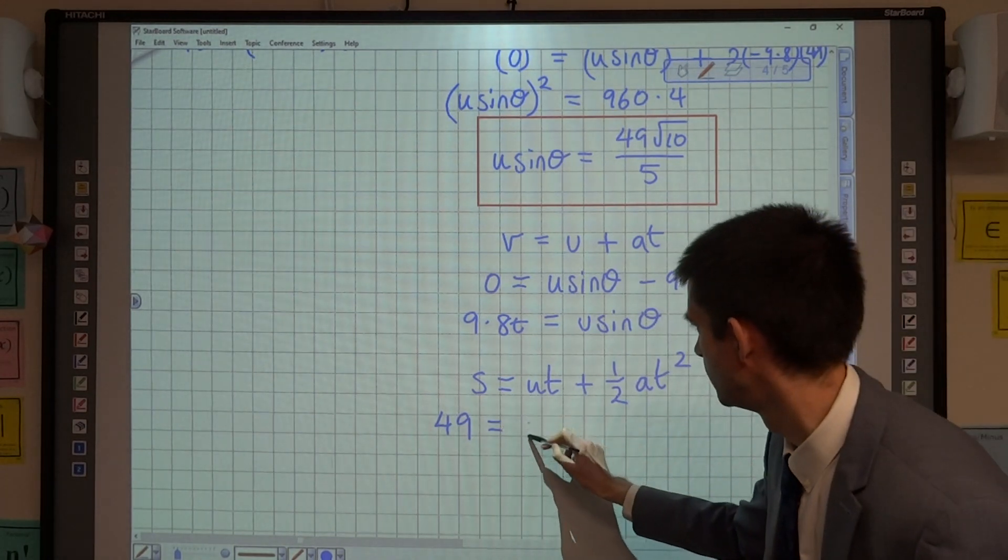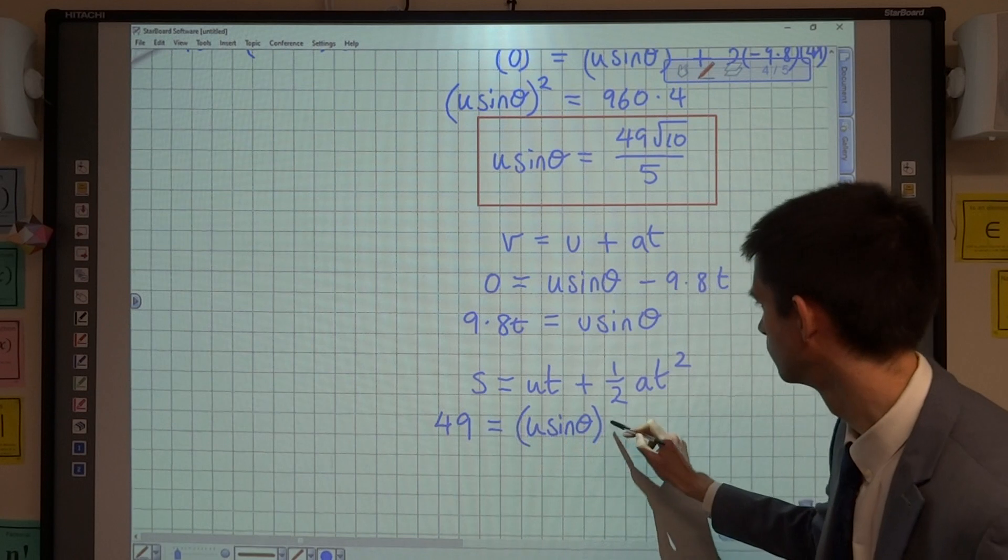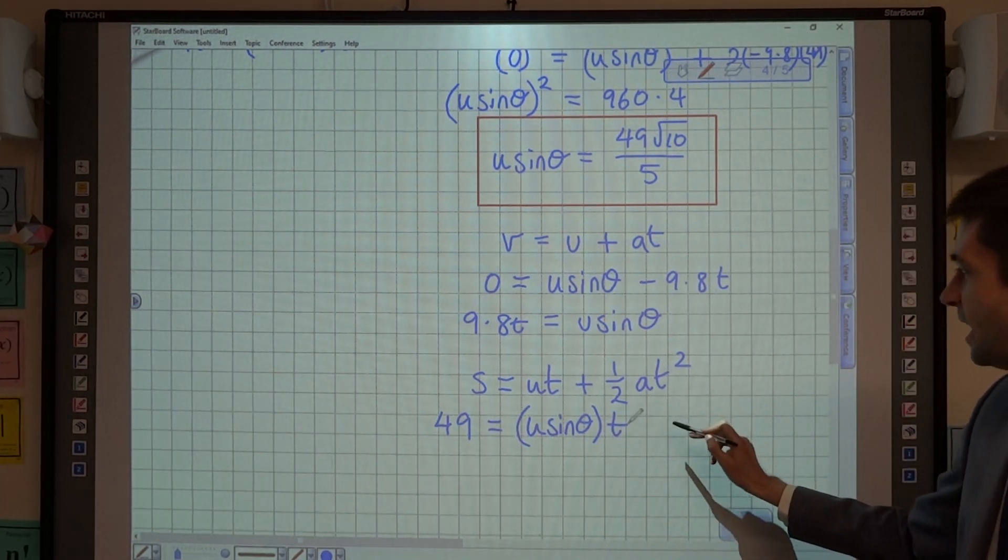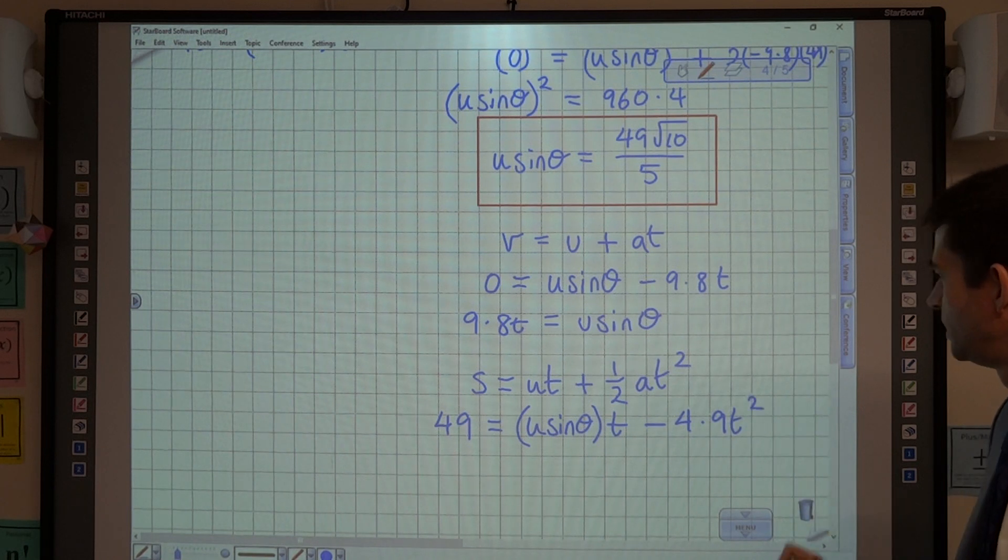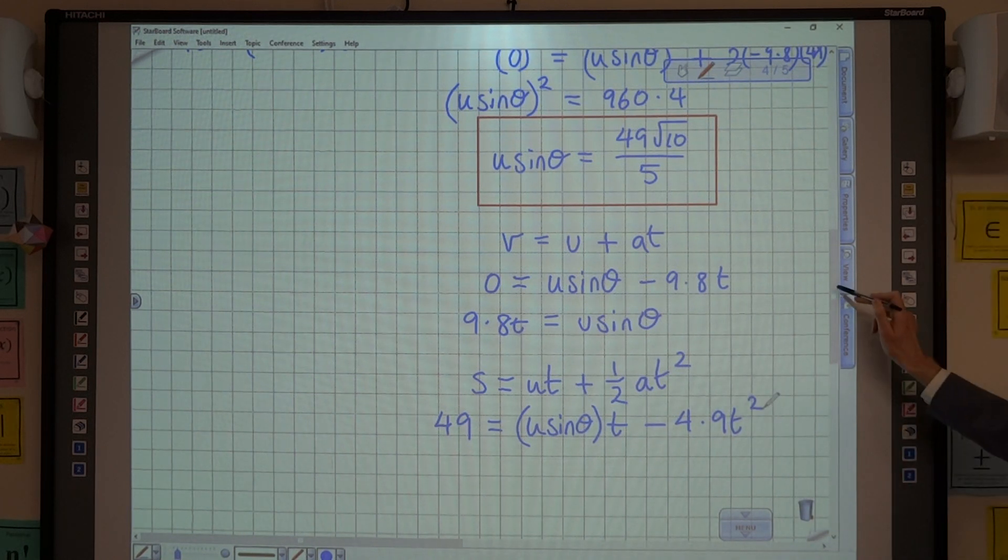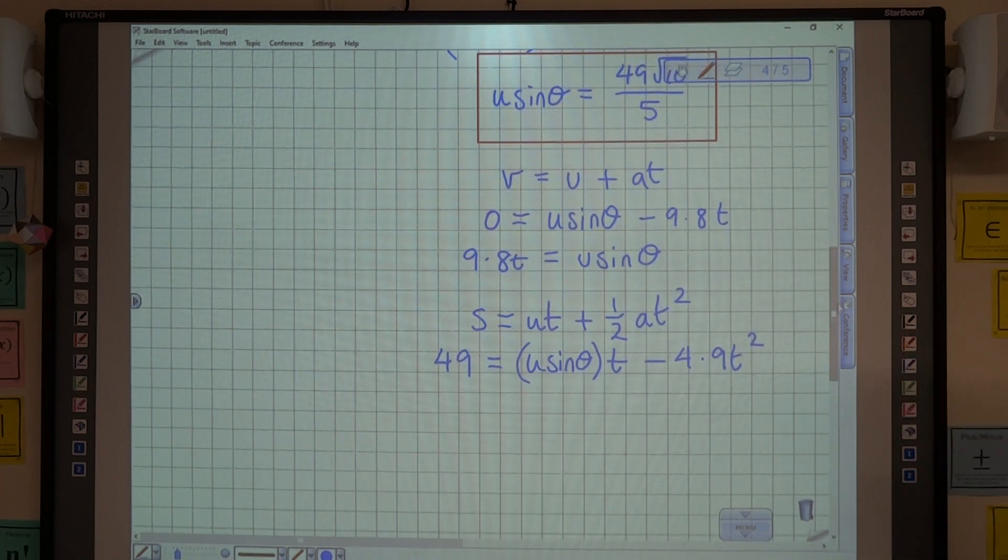U is u sin theta. Plus a half at squared, so minus 4.9 t squared.